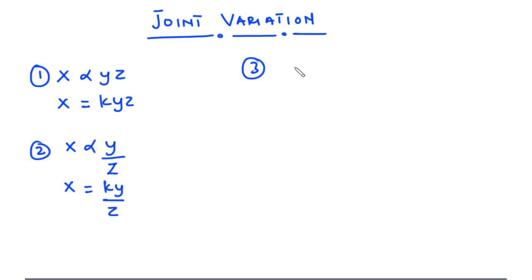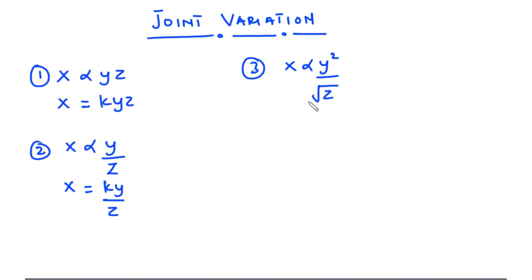Let's look at a third case. If x varies directly as the square of y and inversely as the square root of z, then we have x varies directly as the square of y and inversely as the square root of z. This becomes x equals k times y squared divided by the square root of z.